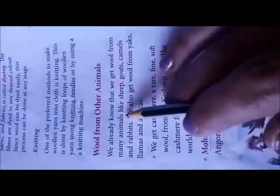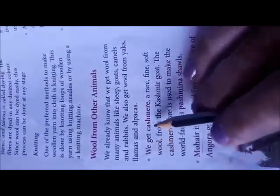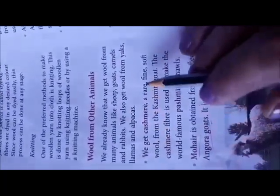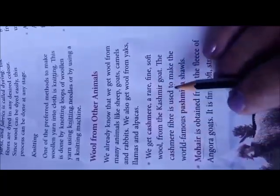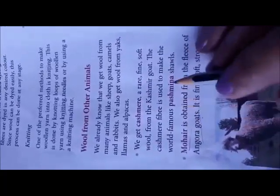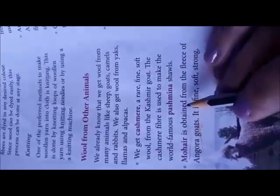Wool from other animals: We get wool from many animals like sheep, goats, camels, and rabbits. We also get wool from yak, llamas, and alpacas. Cashmere is a rare fiber of wool obtained from the Kashmir goat, and the cashmere fiber is used to make the world-famous pashmina shawl.